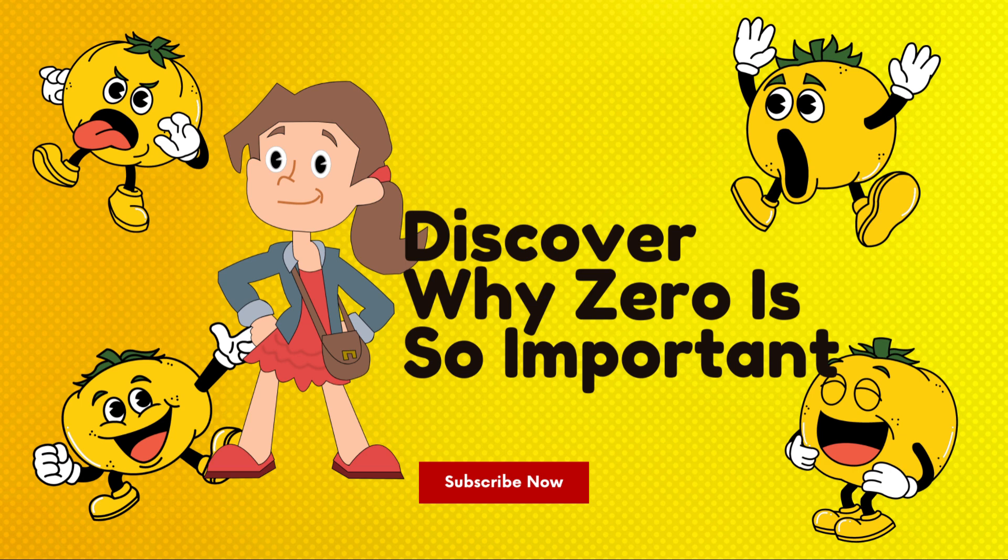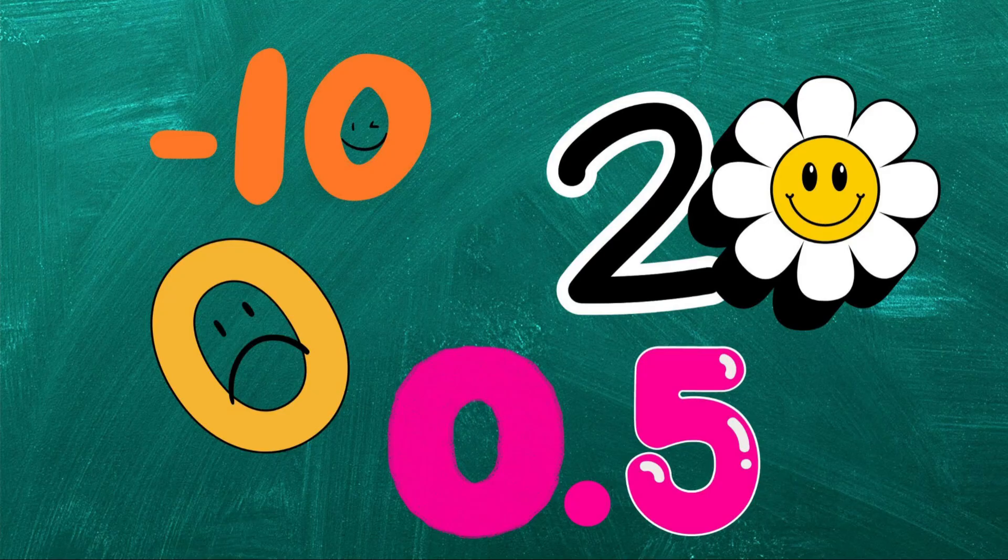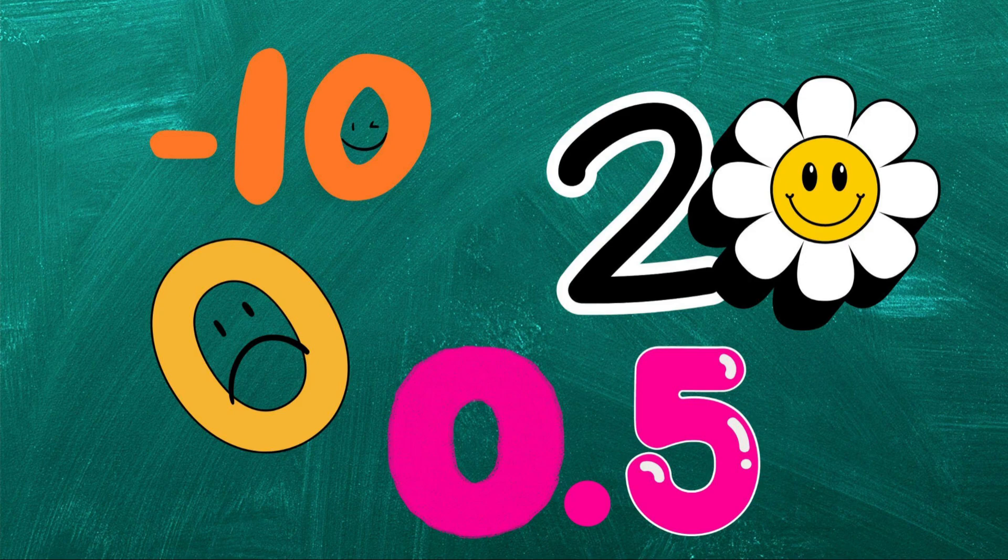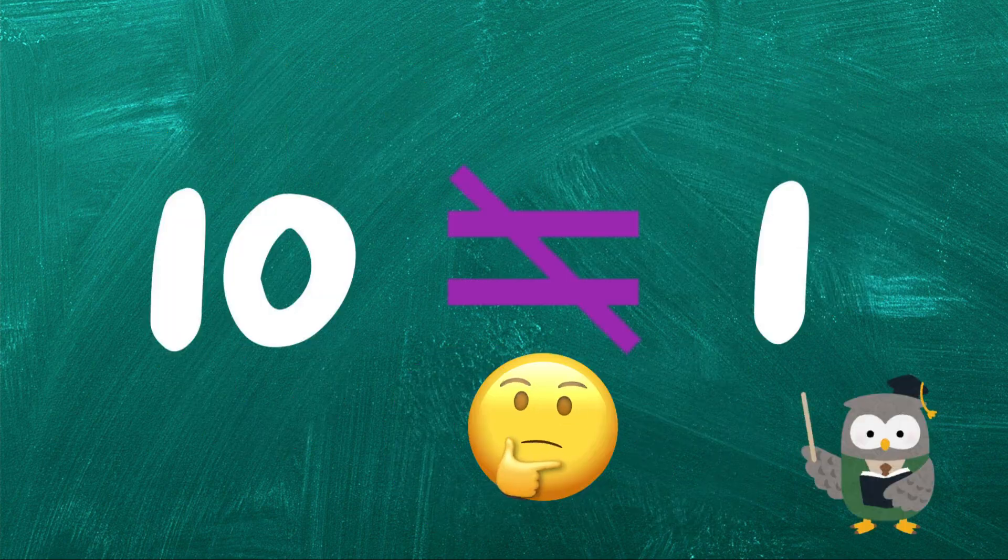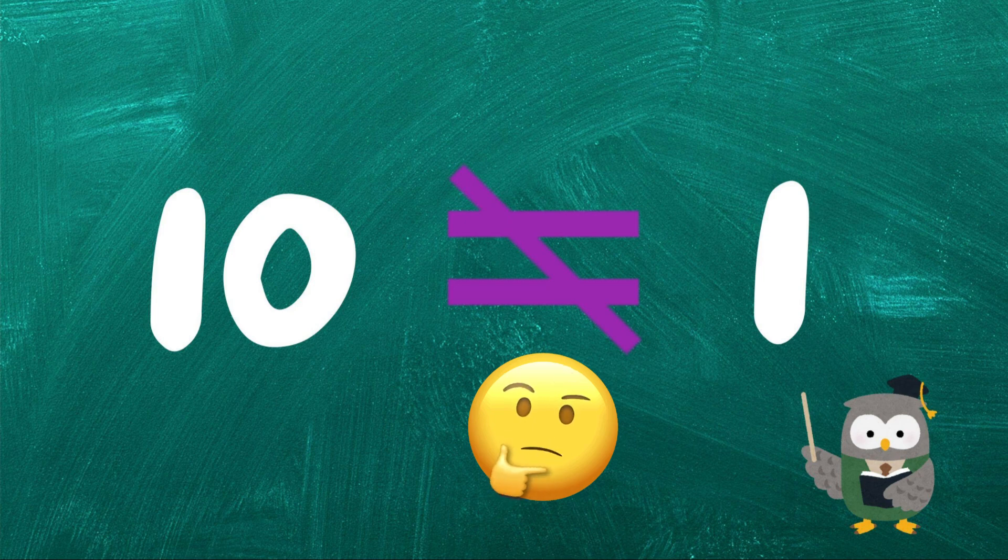Now, some of you might think that zero means nothing. And in a way, you're right. If zero is standing all alone, it does represent nothing. But here's the interesting part: when zero pairs up with other numbers, it takes on a whole new meaning. Let me share a real-life example. I know a child who sees the number ten as just one, because she thinks the zero means nothing. But this isn't quite right, and here's why.